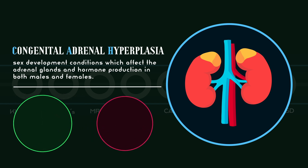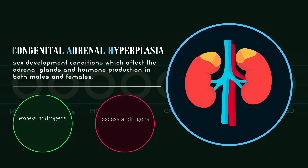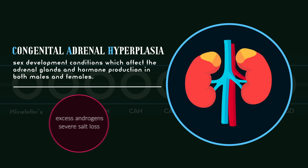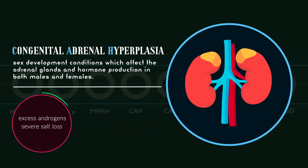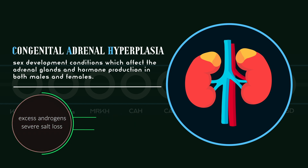Both males and females with CAH often experience excess androgens and severe salt loss in the body, which affects fluid levels and blood pressure. In females with CAH, the excess androgens often result in virilized, also known as masculinized, genitalia. And in males with CAH, genitalia is usually unaffected.